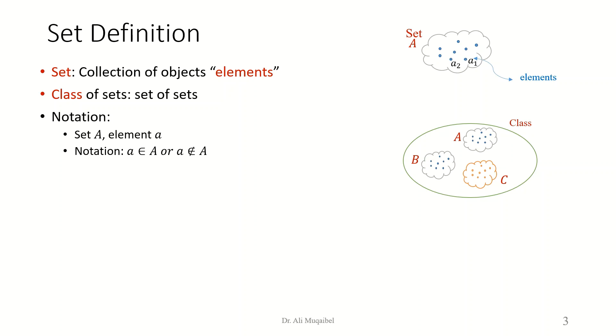In terms of notation, we're going to use capital letters to represent a set, like in this case. And then we use small letters to represent the elements. In terms of notation, we can say that element a belongs to the set A, or the element a does not belong to set A. So this is the new notation.